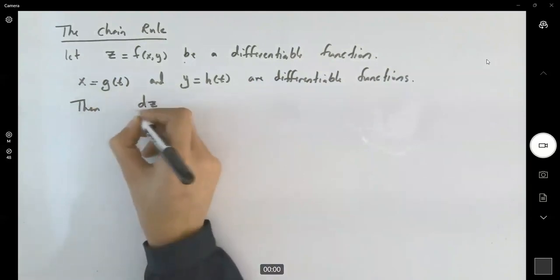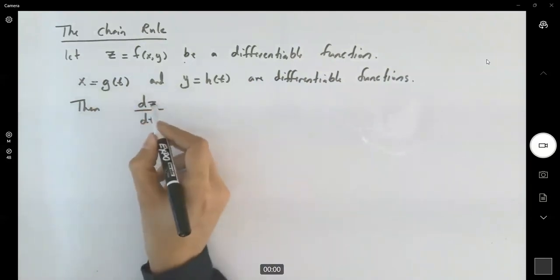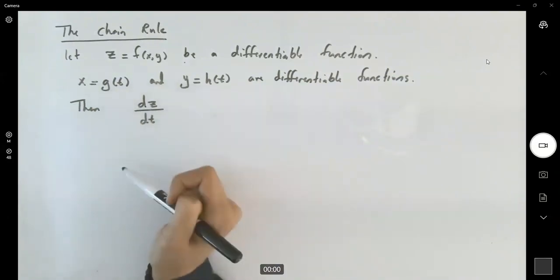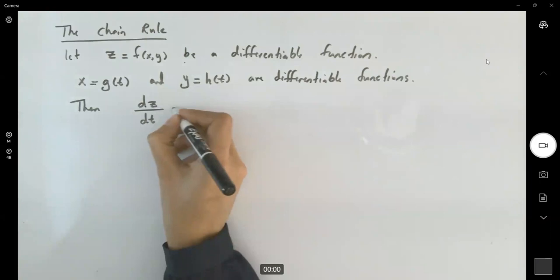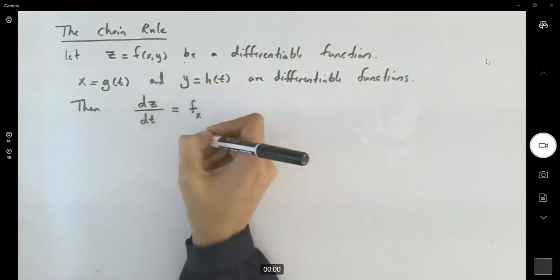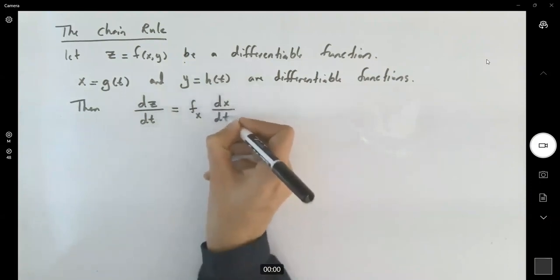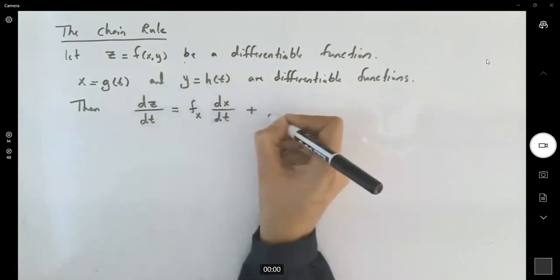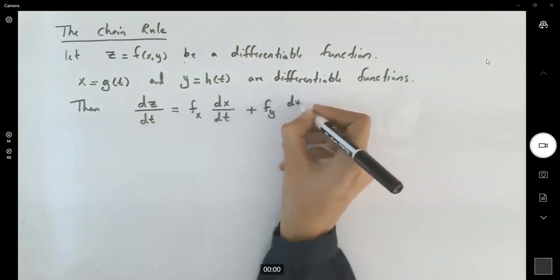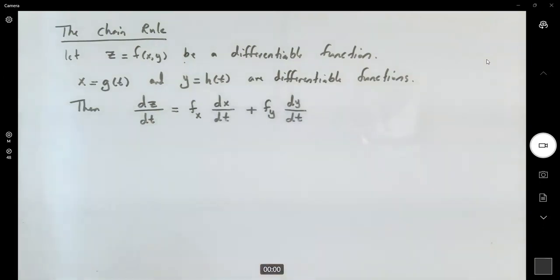Then dz/dt, the rate of change of z with respect to this new variable, is defined as the partial derivative of f with respect to x times the rate of change of x with respect to t, plus the partial derivative of f with respect to y times the rate of change of y with respect to t.